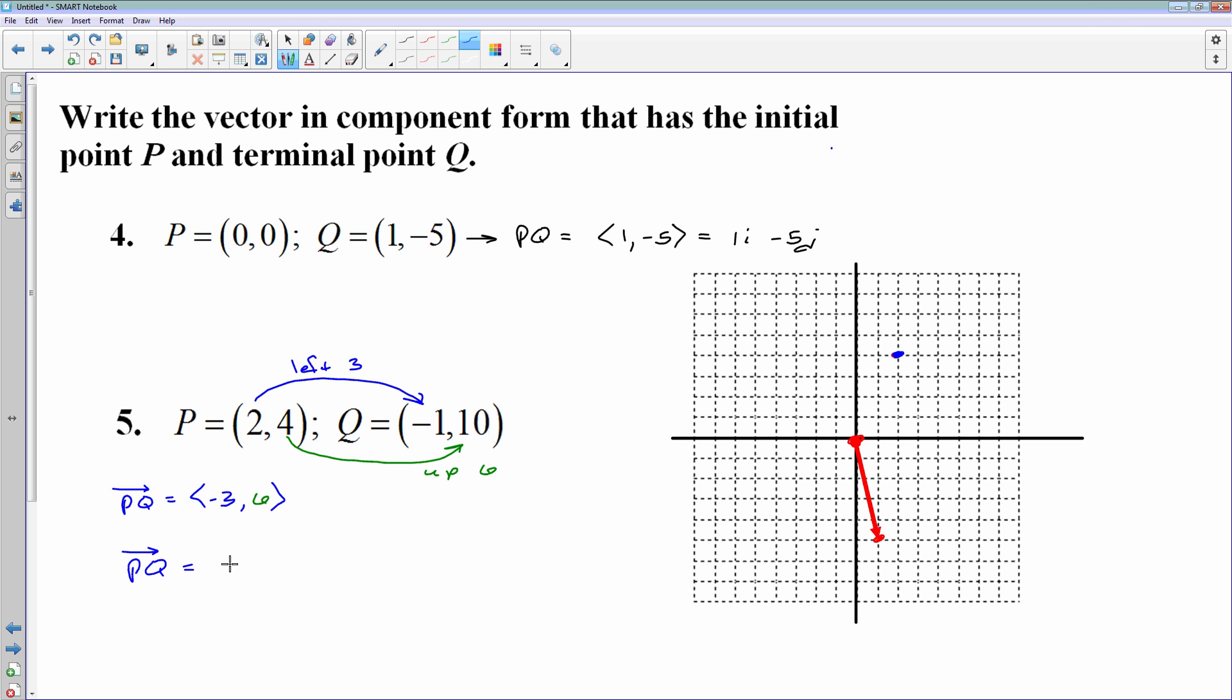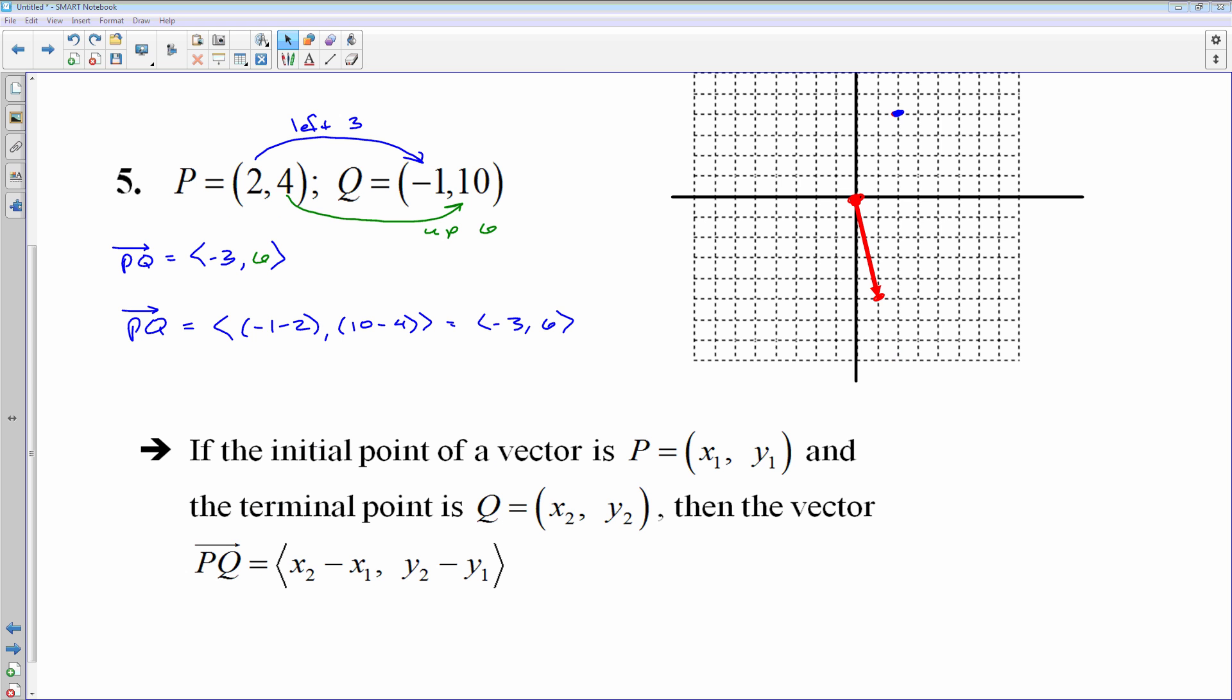And what you do is you do terminal point minus initial point. So it's negative 1 minus 2 is the first number. And then 10 minus 4 is the second number, which would give you negative 3, 6. And I think on the next page I'll pause it and I'll put up a formula for you that can help you out.